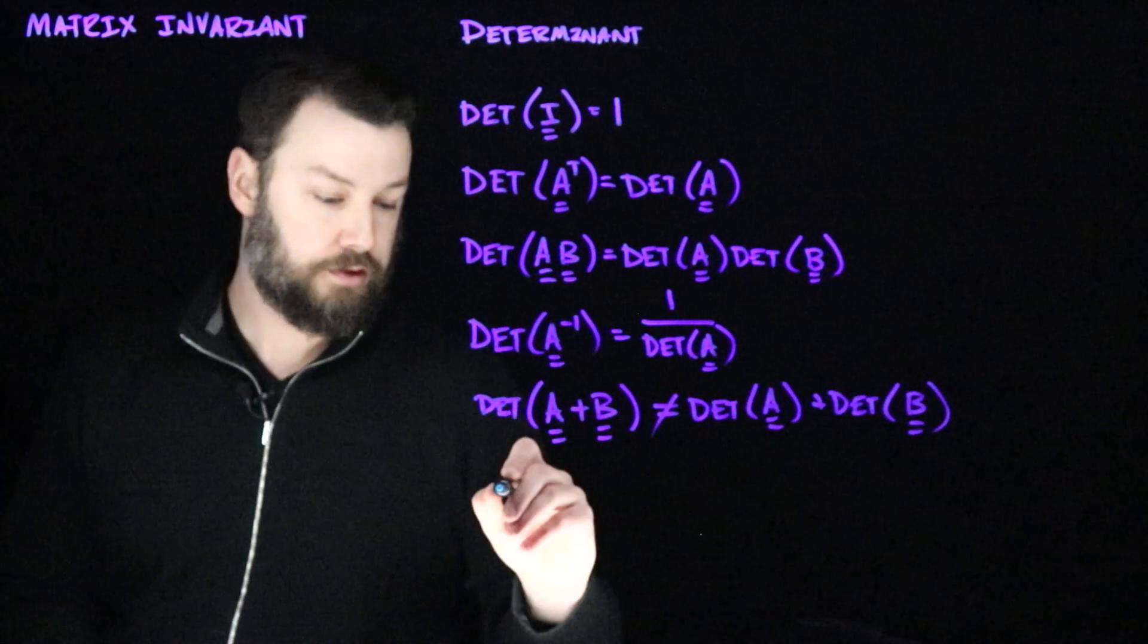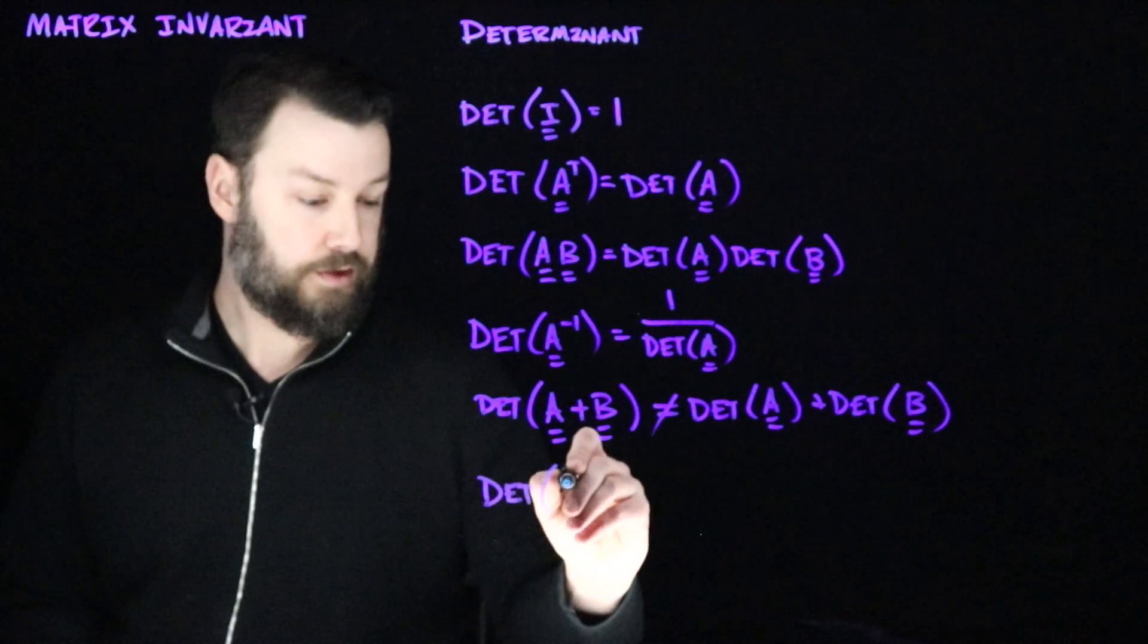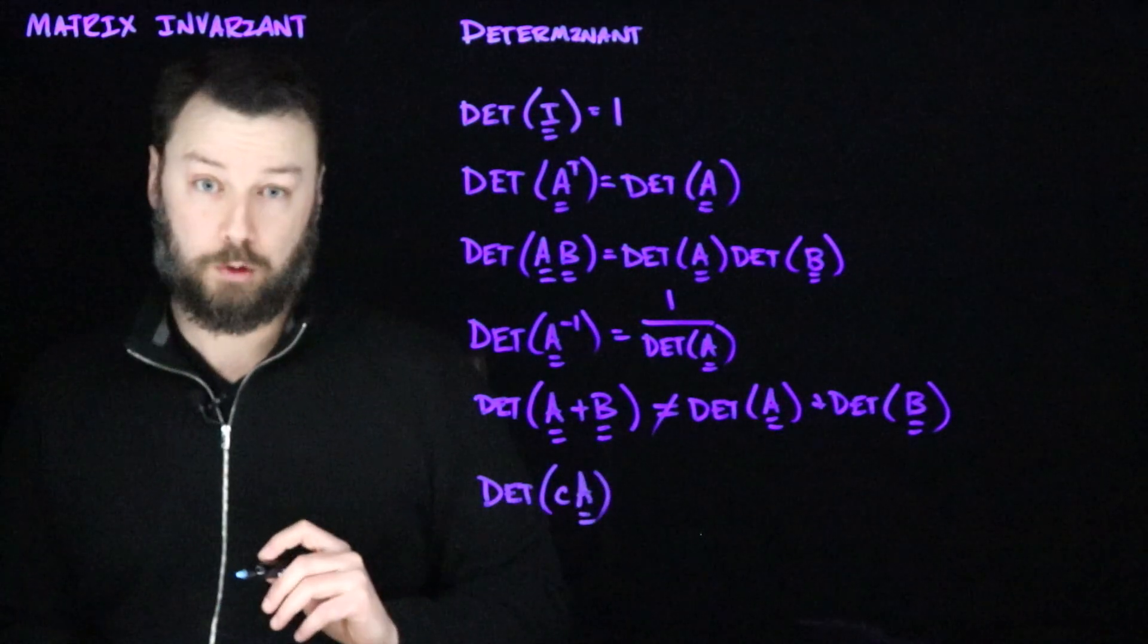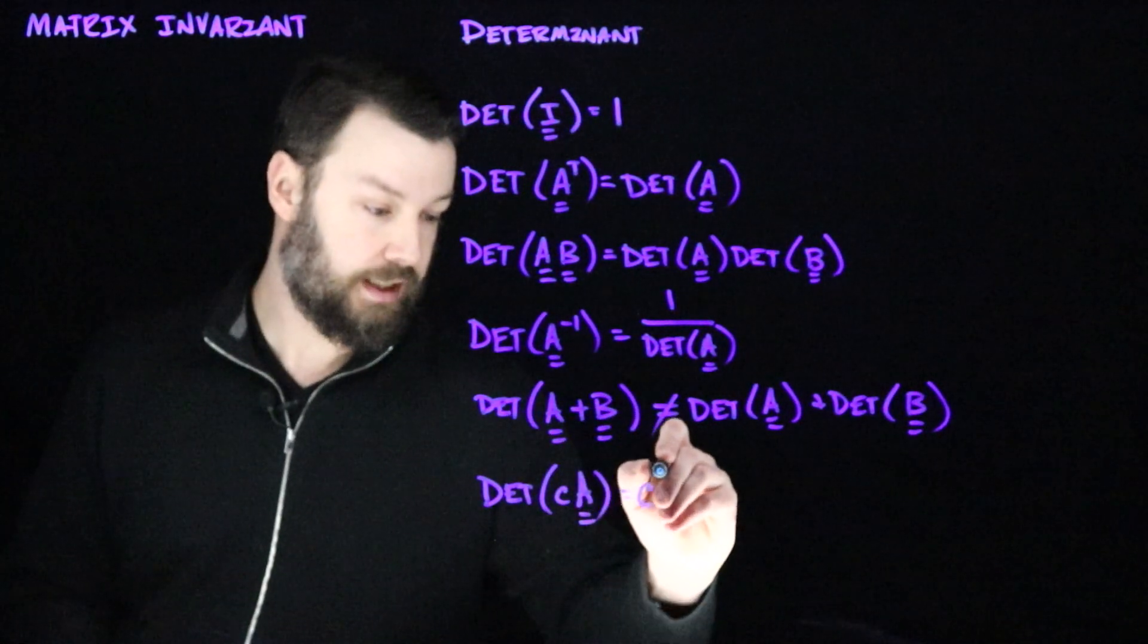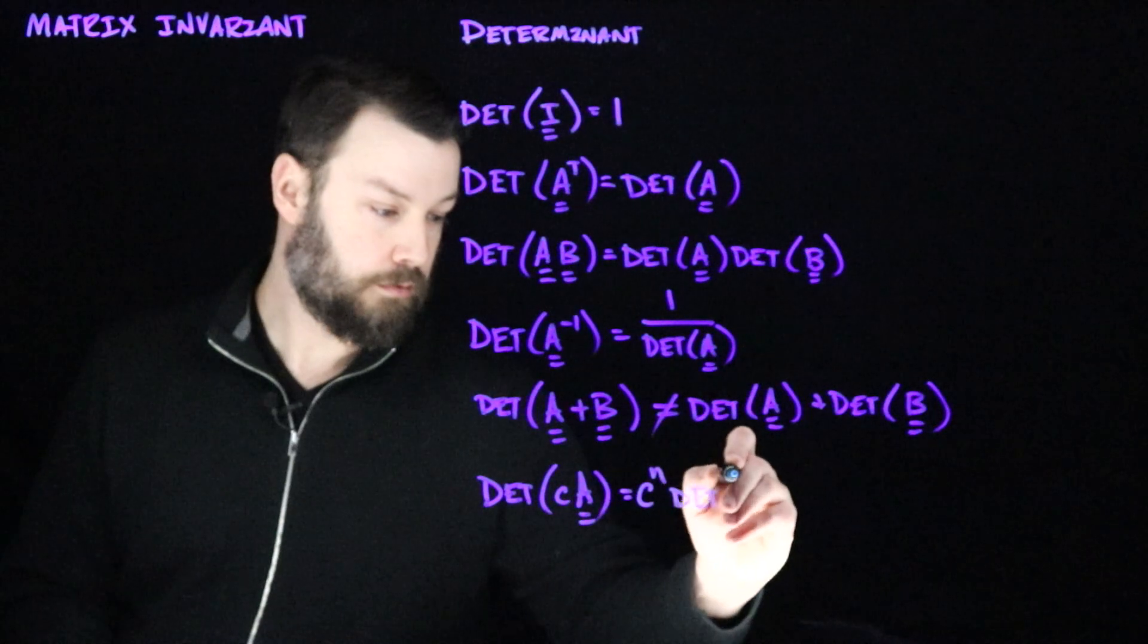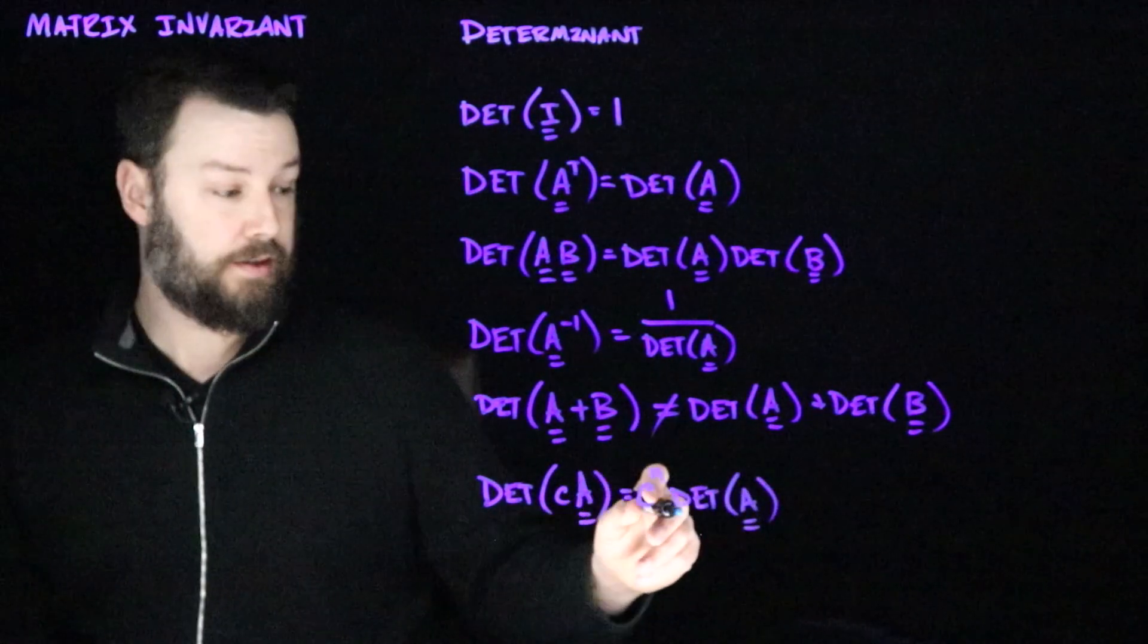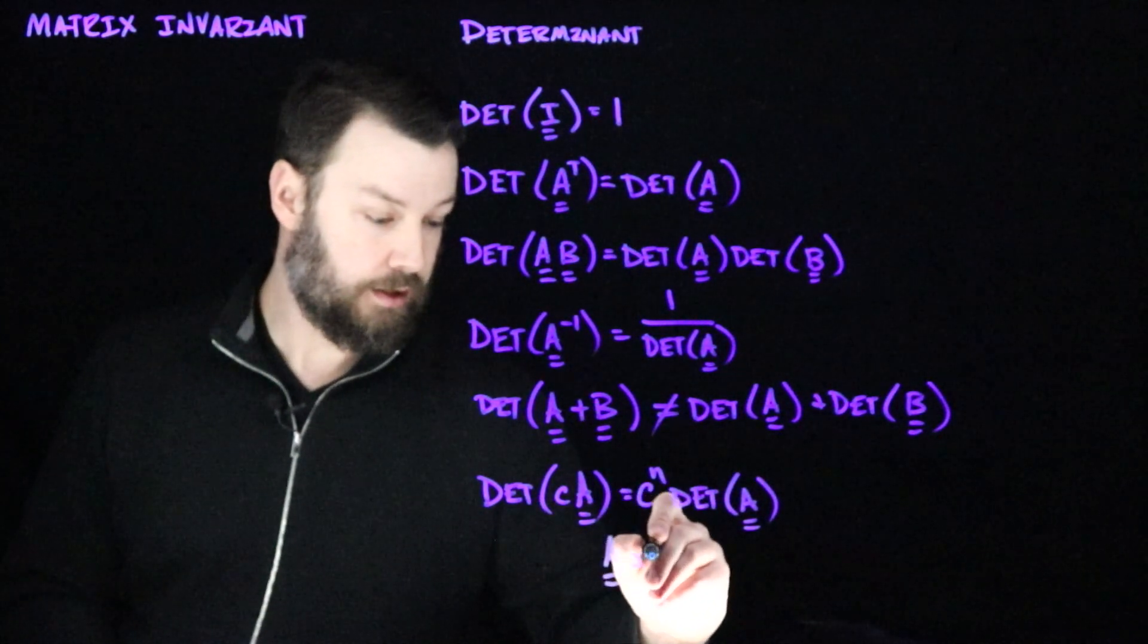Another thing to realize is that if I have some scalar C that I multiply by the square matrix A, that this actually gets kind of amplified. That is, that we would have C to the N multiplied by the determinant of A, where N is the size of the matrix. So this is saying that A is N by N.